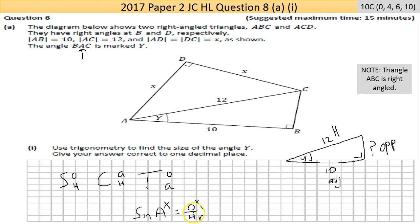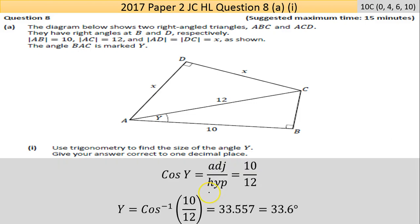So sine is gone. I think it's cosine. Cosine of the angle equals the adjacent over hypotenuse. The adjacent given in the question was 10, and the 12 is my hypotenuse.